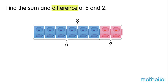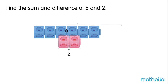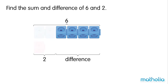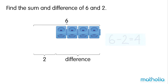To find the difference between two numbers, we subtract the smaller number from the greater number. 6 minus 2 equals 4. The difference between 6 and 2 is 4.